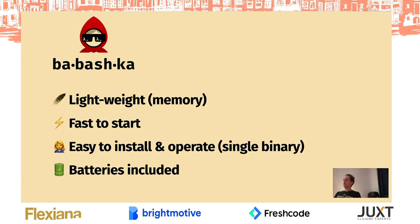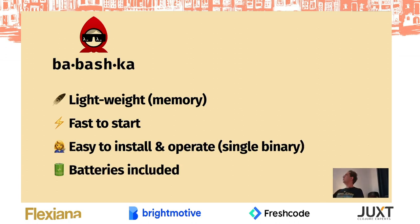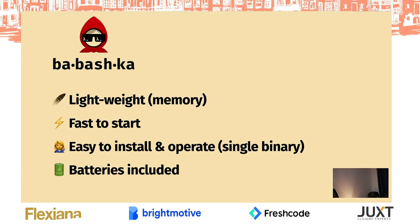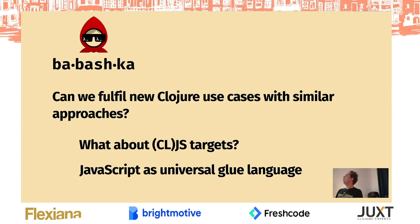I was wondering if we could repeat this Babashka recipe in another domain. Babashka replaces Bash scripts — what more can we come up with around this theme of making a small Clojure runtime from a bigger Clojure runtime? Babashka is built in Clojure in the big JVM Clojure runtime to make a smaller, more focused and more single-purpose tool. So can we fulfill similar use cases with a similar approach?